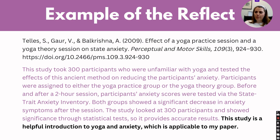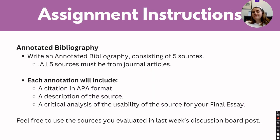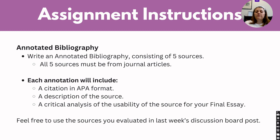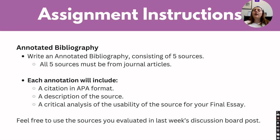For our assignment this week, you're going to be writing an annotated bibliography consisting of five sources. All five sources must be from journal articles. Each annotation will include a citation in APA formatting, a description of the source, and a critical analysis of the usability of the source for your final essay assignments in your outside course. Feel free to use the sources you evaluated last week in the discussion board — rework those little paragraphs to create a really nice annotation. But always make sure you're also commenting on how it's going to be connected to your work: will it work, how will it work, where will you put it in?